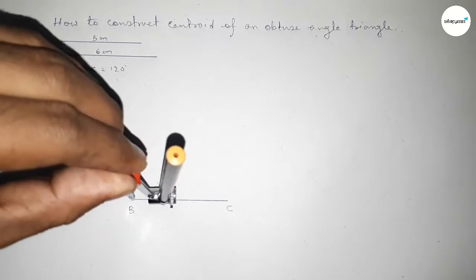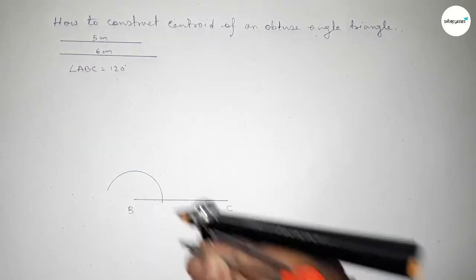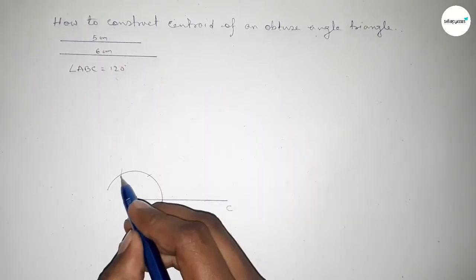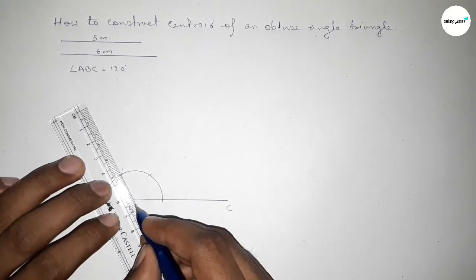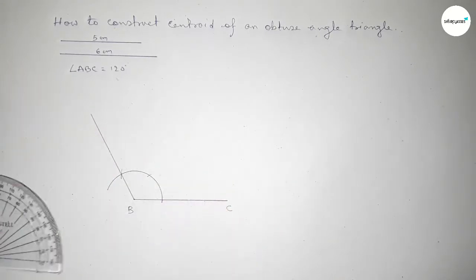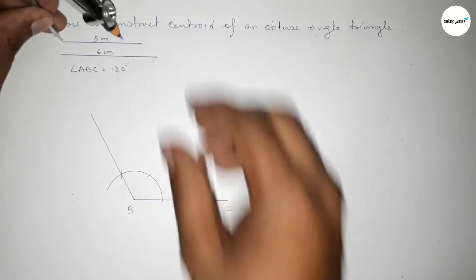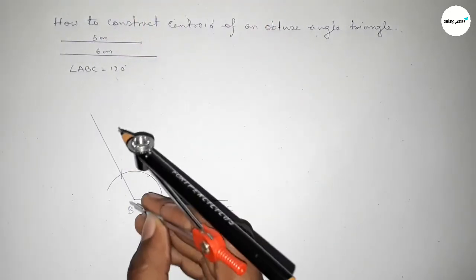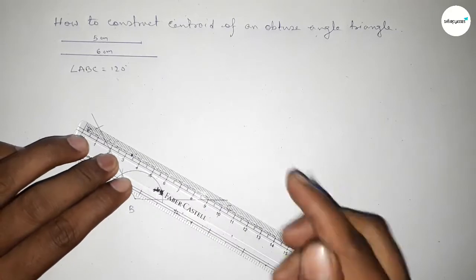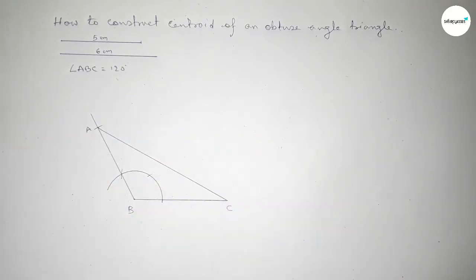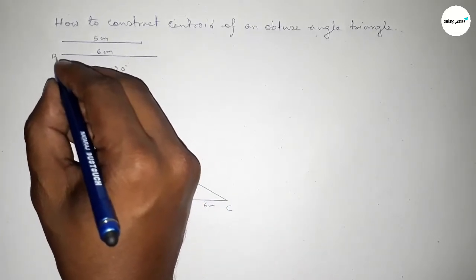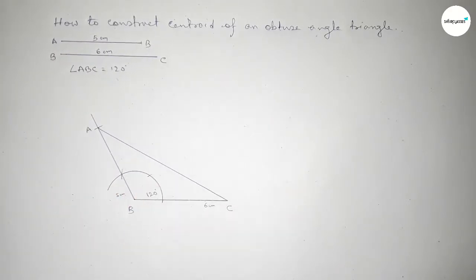Putting the compass on point B and taking any length, drawing arcs to construct 120 degrees — placing the compass at the same length and cutting successive arcs so both curves intersect at a point. Joining this line gives a 120 degree angle. Now taking the length of 5 centimeters with the compass, placing it at B and marking point A. Joining A and C completes the triangle, with BC equal to six centimeters, AB equal to five centimeters, and angle ABC equal to 120 degrees.